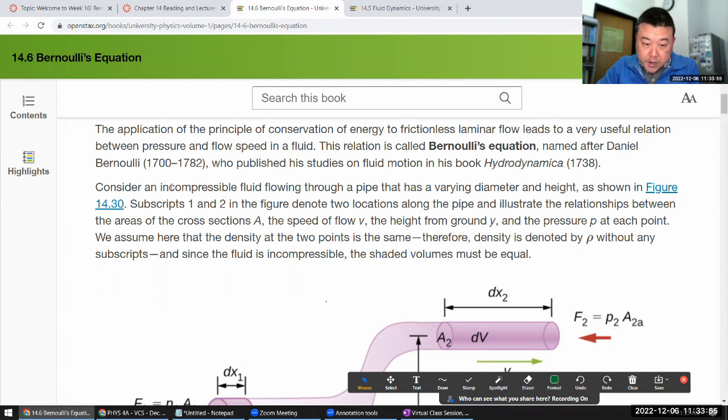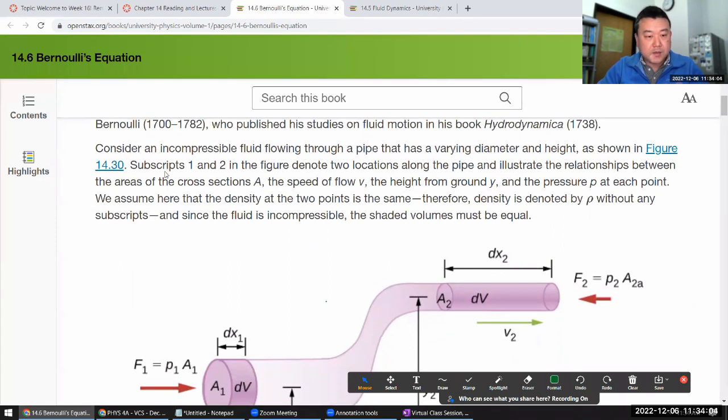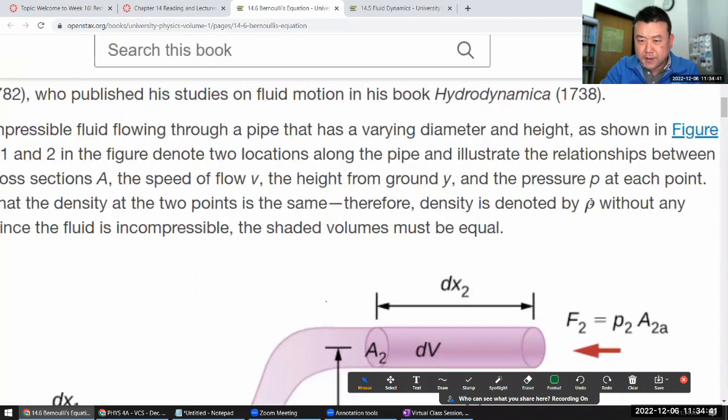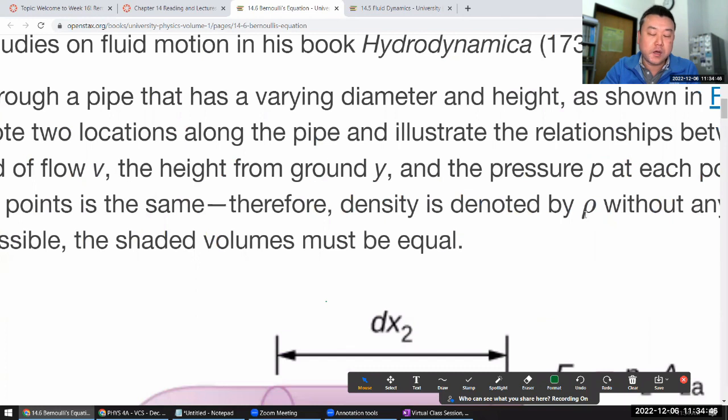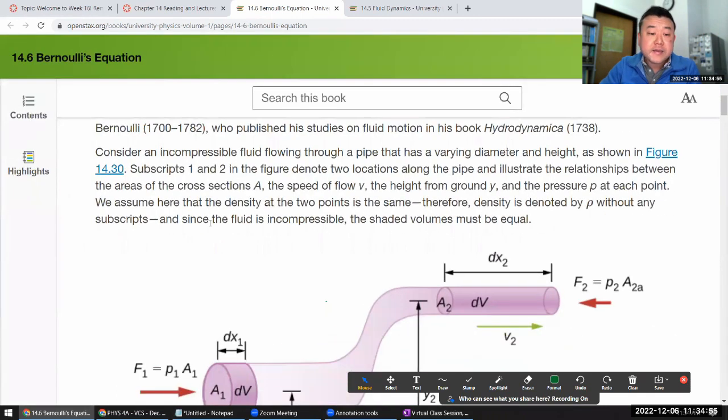There are, I think, a bunch of Bernoullis. So, I'm not going to get too stuck on Daniel, although I guess this is one of the Bernoullis who published his studies on fluid motion in his book, Hydrodynamica, 1738. Consider an incompressible fluid flowing through a pipe that has a varying diameter and height, as shown in the figure below. We'll look at that in a bit. Subscripts 1 and 2 in the figure denote two locations along the pipe and illustrate the relationship between the areas of cross sections A, the speed of flow, the height from ground Y, and the pressure P at each point. So, we have one, two, three, four variables that's going to get subscripts because there are two different locations we'll be looking at. We assume here that the density at the two points is the same. Therefore, density is denoted by, this is not P. Look how different this letter looks from the P above. You should not be confusing these two. This is letter Rho. It's a Greek letter that sounds like R.